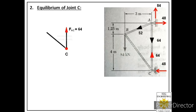For the unknown member BC, we assume tensile force — direction away from joint C — and label it FCB. This is the important step: for a known member, apply Newton's third law to reverse the direction; for an unknown member, always assume tensile (away from joint).